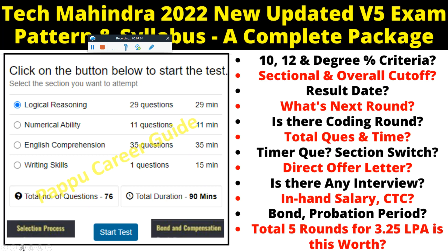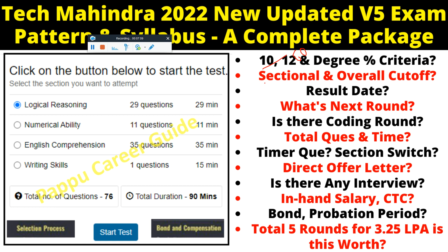To summarize: 60 percent in 10th, 12th, and degree required. Results are declared within two to three days after completing the exam. After completing this assessment, you will receive a Technical and Psychometrics test, then a Conversational test, then Board interviews, and finally a Technical and HR interview.